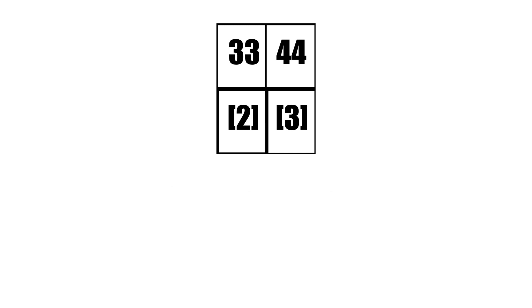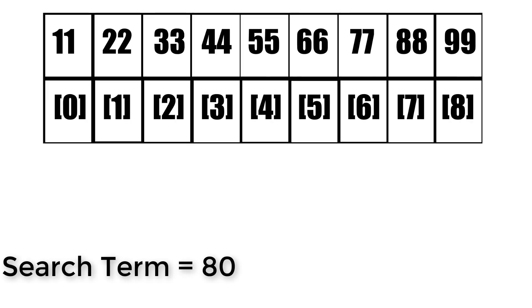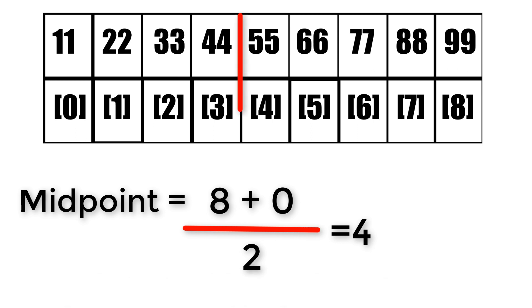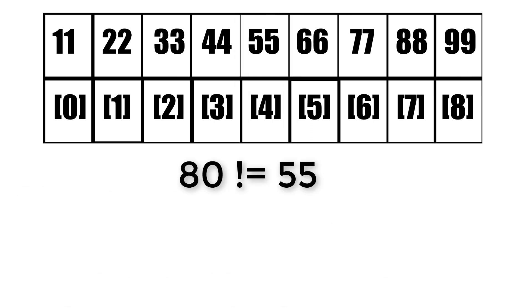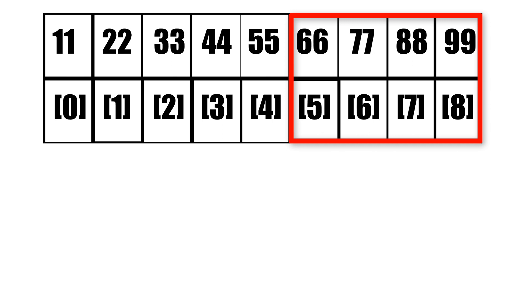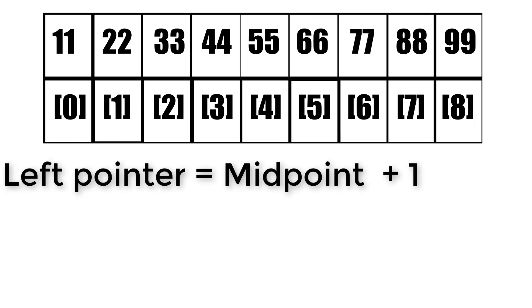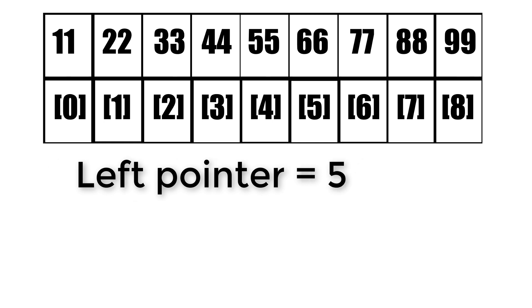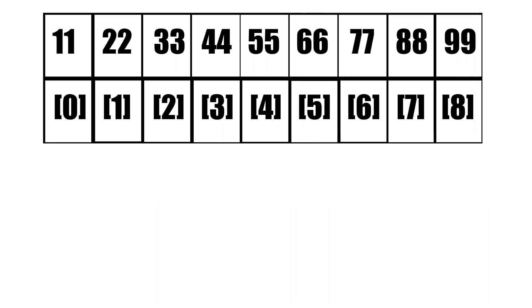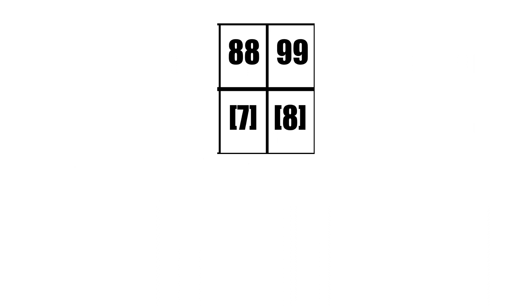I hope that helps explain what the binary search is, but before we go I'm going to give you one more example. So we have the same array again but this time we're going to find the value 80 and check if it's in the array. We get the midpoint again: 8 plus 0 divided by 2 equals 4, so the midpoint is going to be 55 again. 80 is not equal to 55, and 80 is not less than 55. However 80 is greater than 55, so the second half of the array would contain 80 if it exists. The leftmost interval becomes the midpoint plus 1 which is equal to 5, so the interval range shall be from index 5 to index 8.